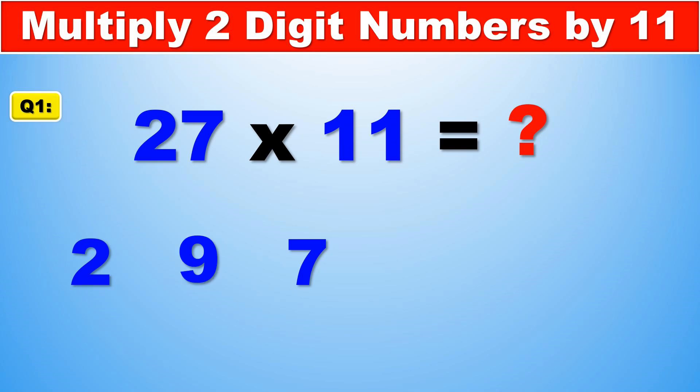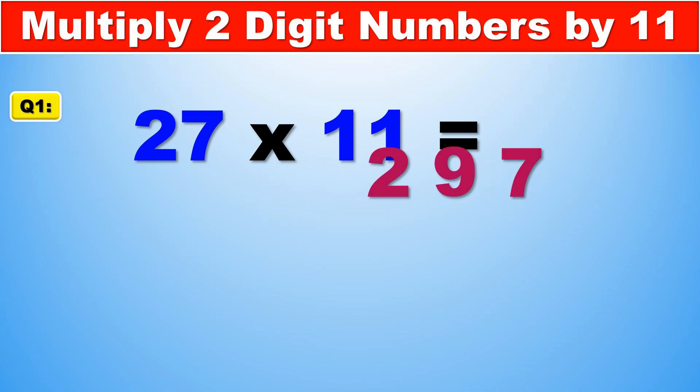Basically, add the two digits together and put it in the middle of the number and there you have it. So 27 times 11 is 297. And that is the answer.